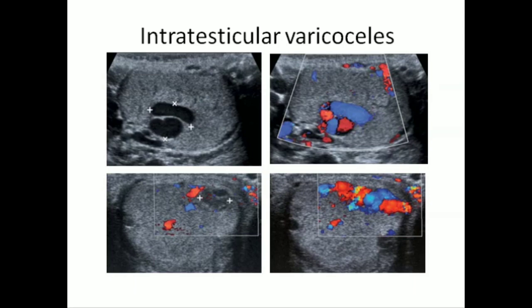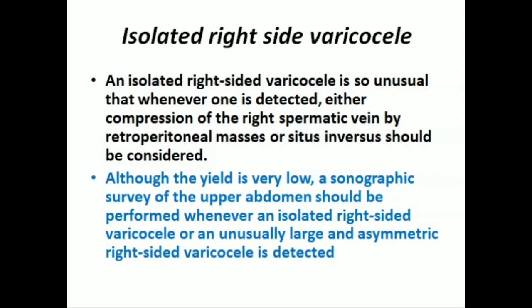These are intratesticular varicoceles appearing as cystic masses; with color Doppler they show good flow. This is another solid mass appearance of varicocele — with Valsalva it shows increased blood flow. Isolated right-sided varicocele is unusual, and whenever one is detected, either compression of the right spermatic vein by retroperitoneal masses or situs inversus should be considered. Although the yield is low, a sonographic survey of the upper abdomen should be performed whenever an isolated right-sided varicocele or an unusually large and asymmetrical right-sided varicocele is detected.